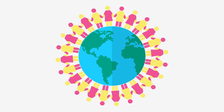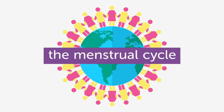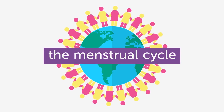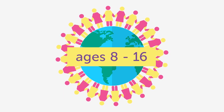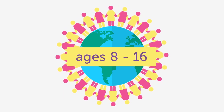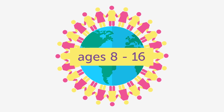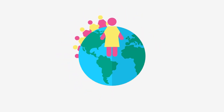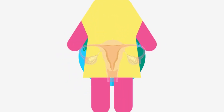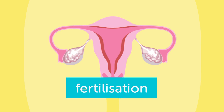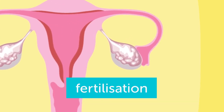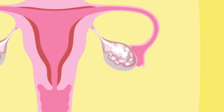A period is part of something called the menstrual cycle, which starts in girls when they reach puberty, any time from around the ages of 8 to 16. It happens to girls all over the world and it's perfectly natural. We have this cycle to produce eggs for fertilization. It's an important part of the reproductive process that enables women to become pregnant and have a baby if they want to.